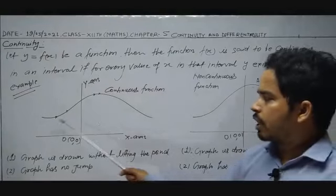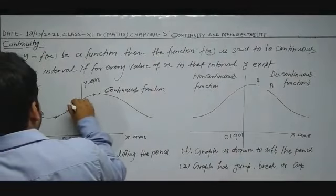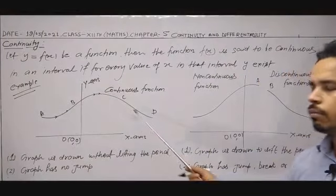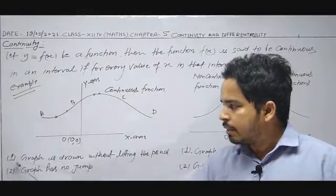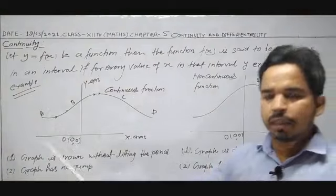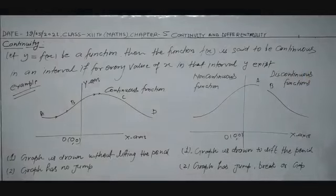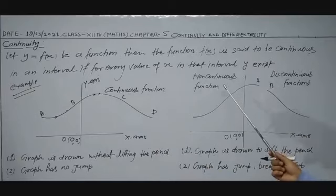For the continuous function, I drew a curve A, B, C, D — which is continuous with no gap, no break, and no jump. The graph is drawn without lifting the pencil. For the non-continuous function, the graph is discontinuous or non-continuous — both terms mean the same thing. The graph with a curve C, A, B, D has a break at point A, making the whole graph discontinuous.